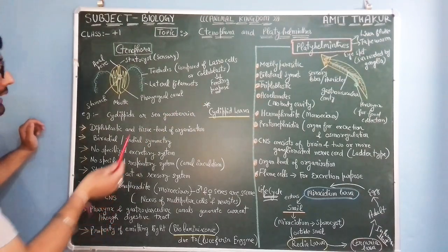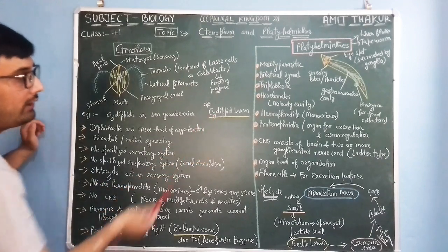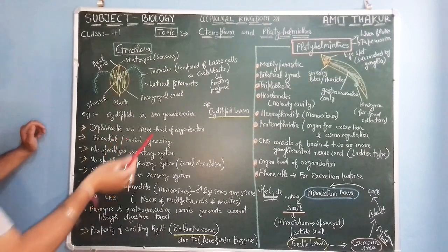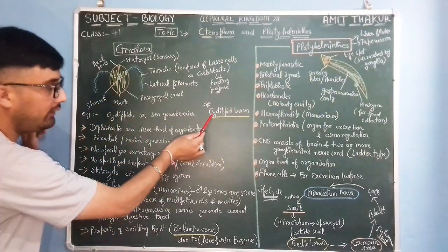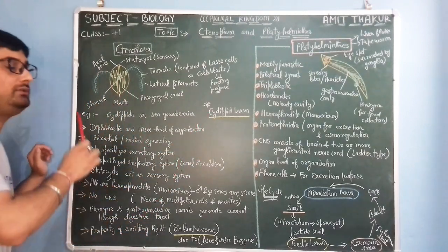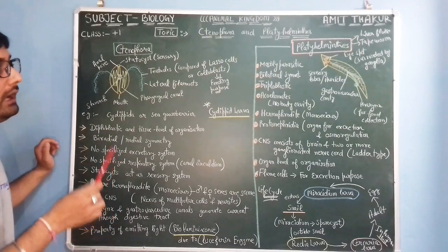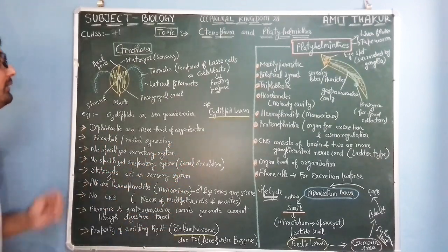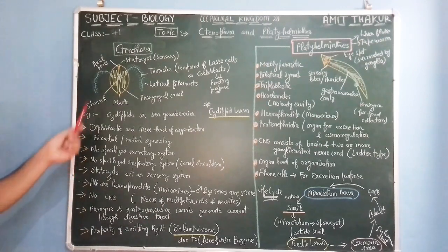And Cydippid larvae, Cydippid larvae in the life cycle of the Ctenophora, it is very important. Cydippid larvae, larval stage. If you don't remember for the competitive examinations, Cydippid larvae.